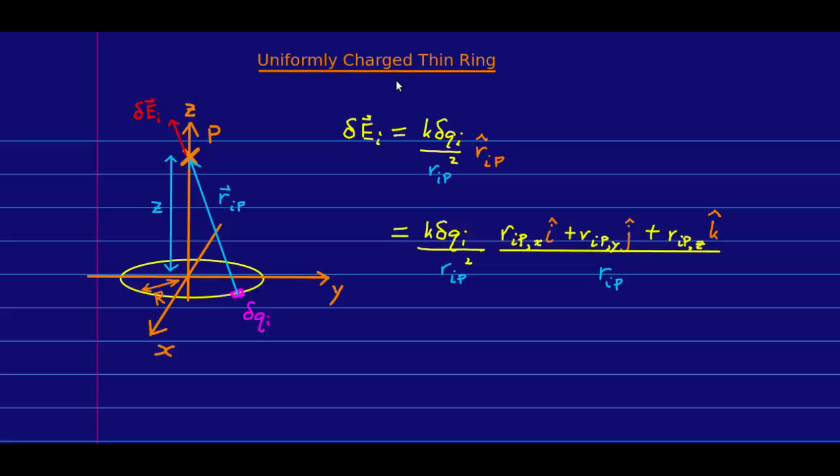Now, I'm going to do a uniformly charged thin ring. And so, this is a ring which has some radius capital R, and we're looking at a point on the axis through the middle of the ring. So, I've made that my z axis. And again, the ring is thin compared to the distance away, so we can treat it as having no thickness at all.